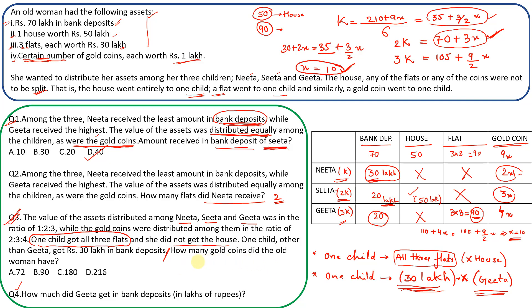Since x = 10, the total value of gold coins is 9x = 90 lakhs. Each gold coin is worth 1 lakh, so the old woman had 90 gold coins — that is the answer to question 3. For question 4, which asks how much Gita received in bank deposit, the answer is 20 lakhs. A straightforward result from our table.